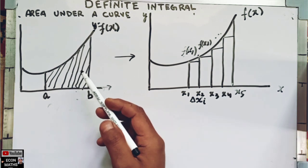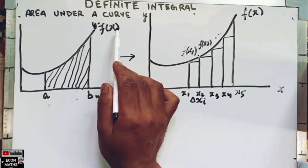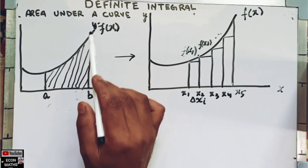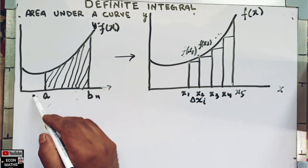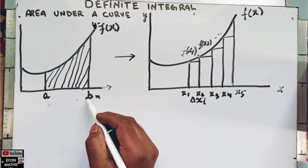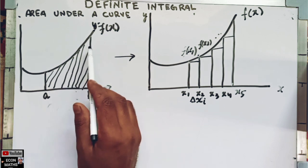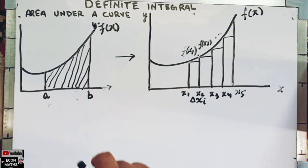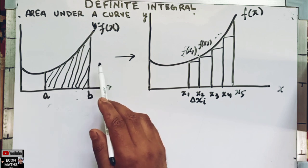We know that there is no geometric formula for finding the area under an irregularly shaped curve such as y = f(x). If this is an irregularly shaped curve and we are told to find the area between x = a and x = b — that is, the shaded region — we can't use the usual geometric formulas.